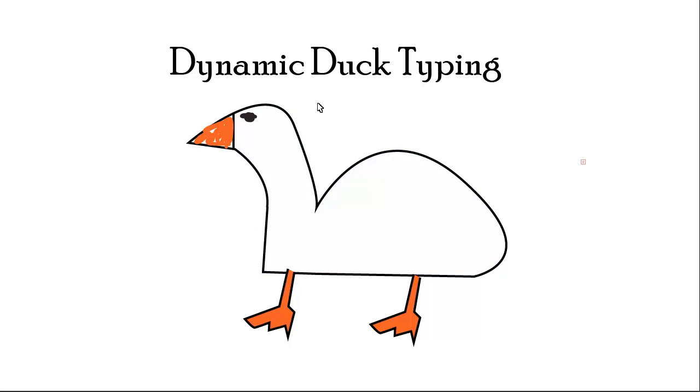In dynamic duck typing, it can look at this object that says it's a duck, and it's going to look at the actual methods and properties on that object to see whether or not it's actually suitable for object execution. So basically, it's going to look at, does this thing walk? Yes, it does. It can walk.